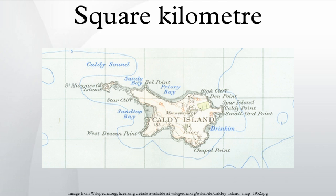Note also that if a piece of land — say a large park — is described as '5 kilometres square', that means it has the shape of a square with each side being 5 kilometres long. This means the park has an area of 25 square kilometres.